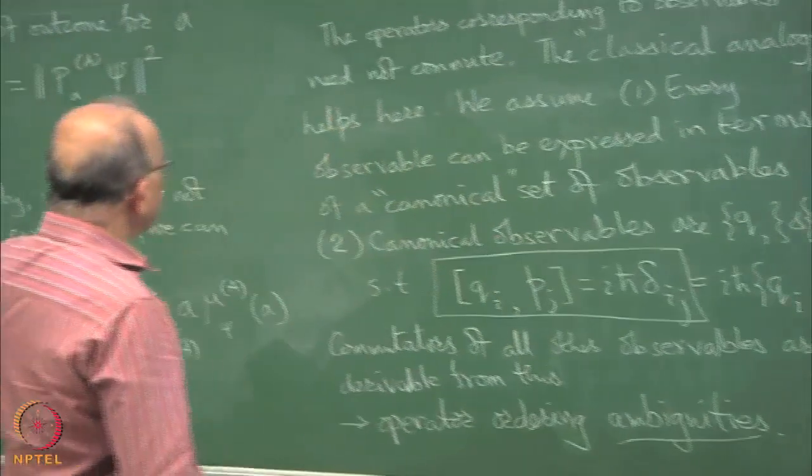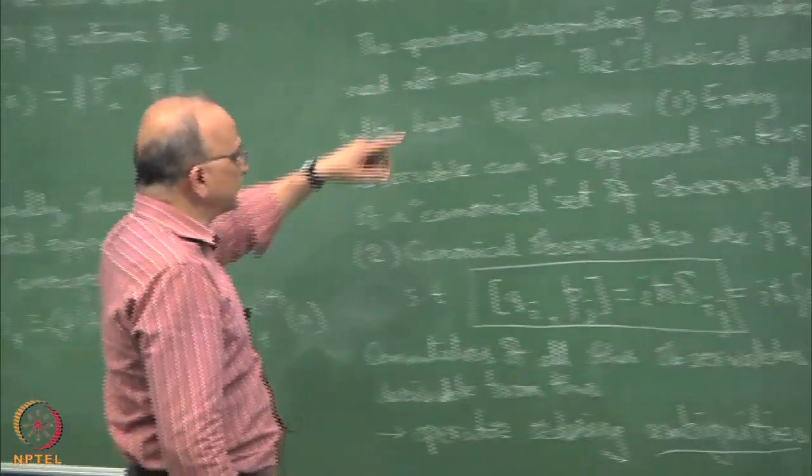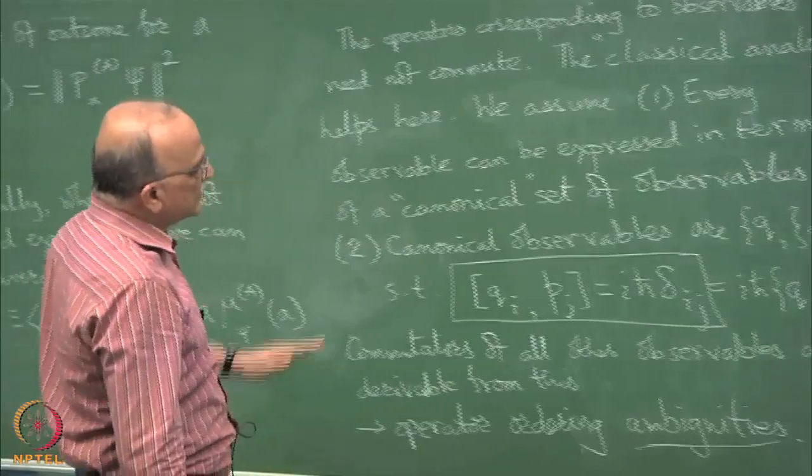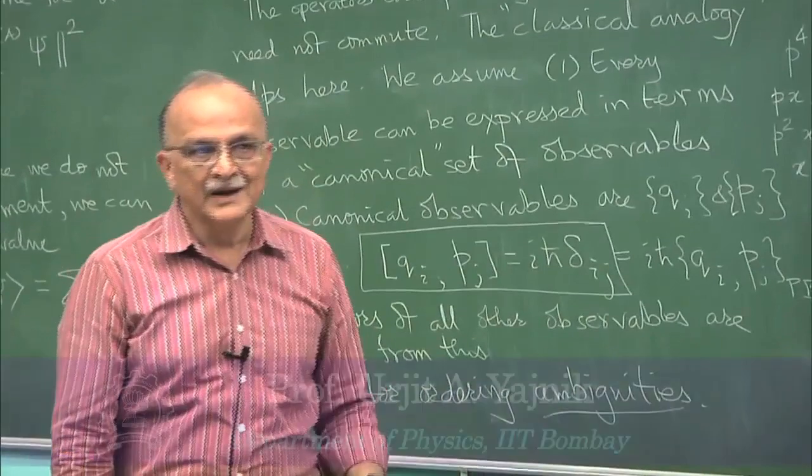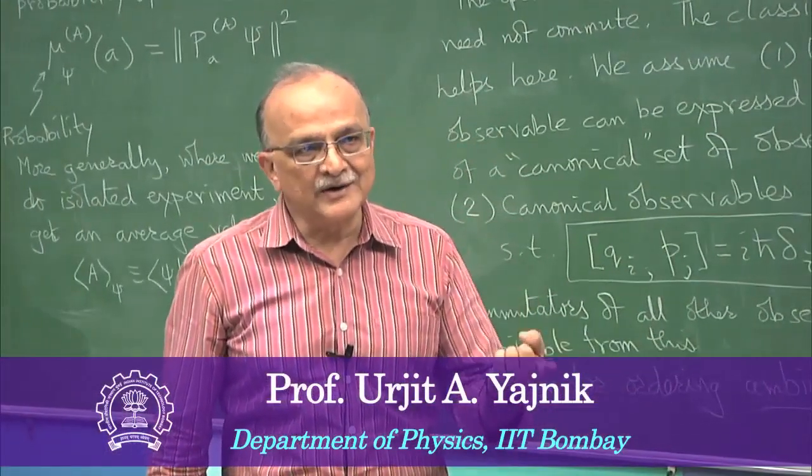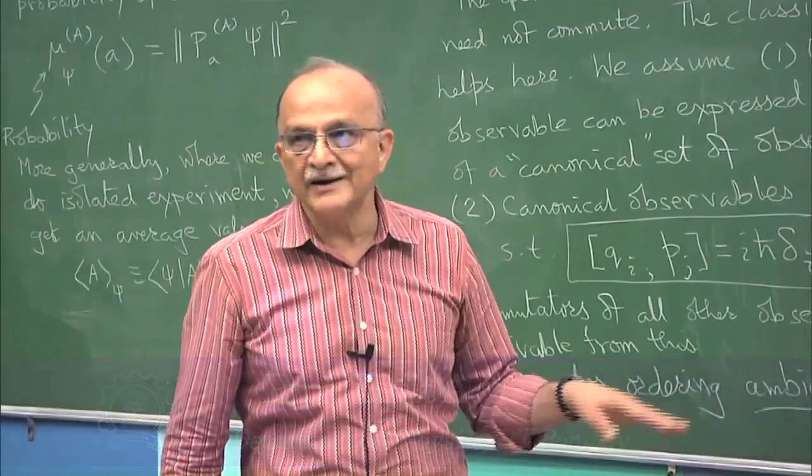And there is actually another point here which is that this quantum kinematics hypothesis that every observable will be expressible in terms of q and p can fail. And it fails royally with spin, spin is a quantum number for which you do not have any space time representation and you do not have any classical analog.